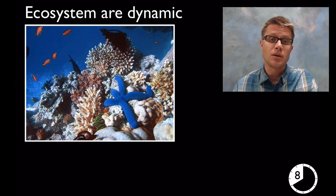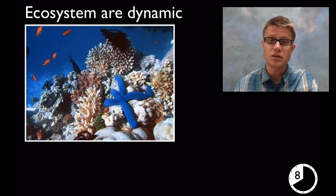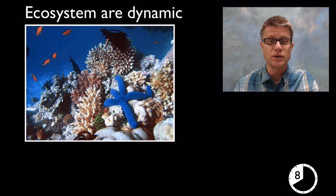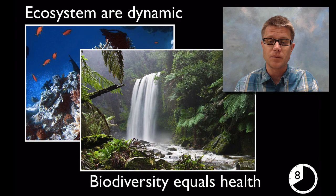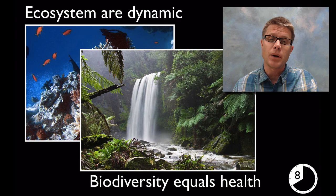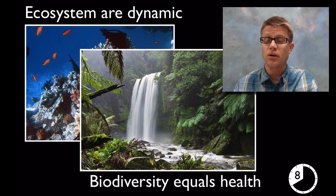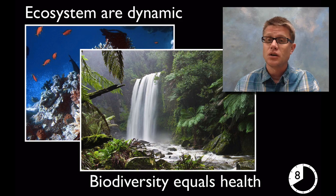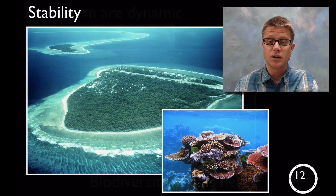Moving into middle school, talk about ecosystems — what are all the parts of an ecosystem — and remind students that they're incredibly dynamic and constantly changing. When you look at an ecosystem you're just looking at it at one point in time, but they change over time. Remind them that biodiversity is a good signal of how healthy that environment is, because with more species, as the environment changes, you're more likely to be able to respond to that.